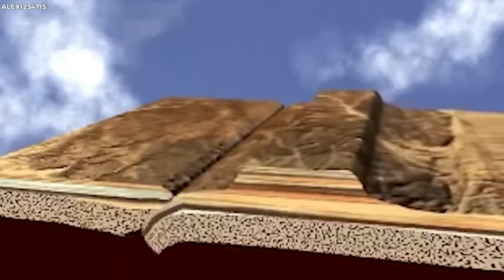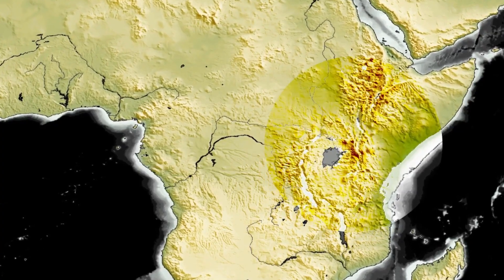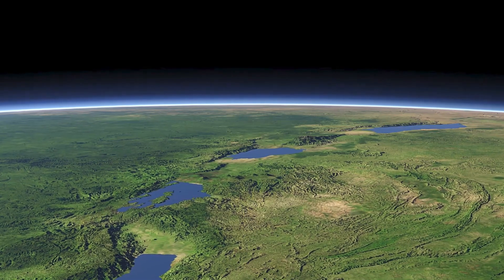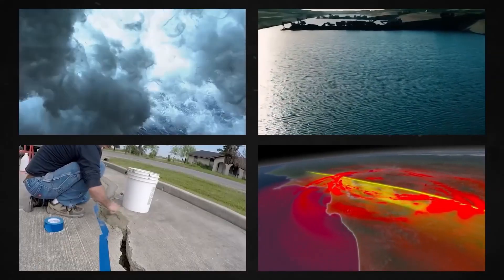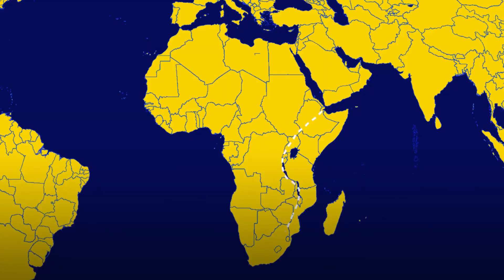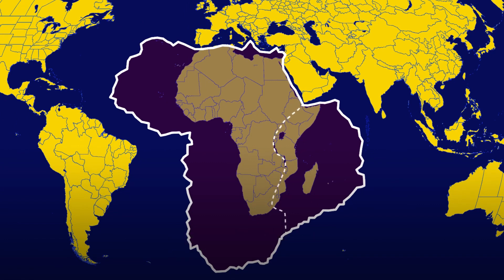Over time, these faults create a series of parallel valleys and ridges, which are characteristic of rift zones. The East African Rift is divided into two main branches: the Eastern Rift and the Western Rift.